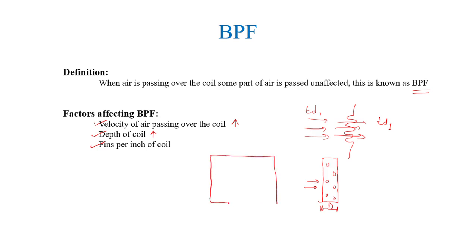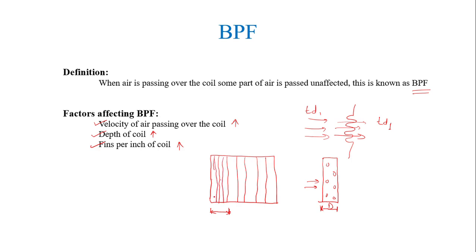The third factor is fins per inch. In the front view of the coil, fins are provided to increase the surface area for better heat transfer. In one inch length, the number of fins present is the fins per inch. If fins per inch are less, there will be more gap between two fins and air can easily pass unaffected. If you increase the number of fins, the gap decreases, more air is affected, and hence the bypass factor will be less.